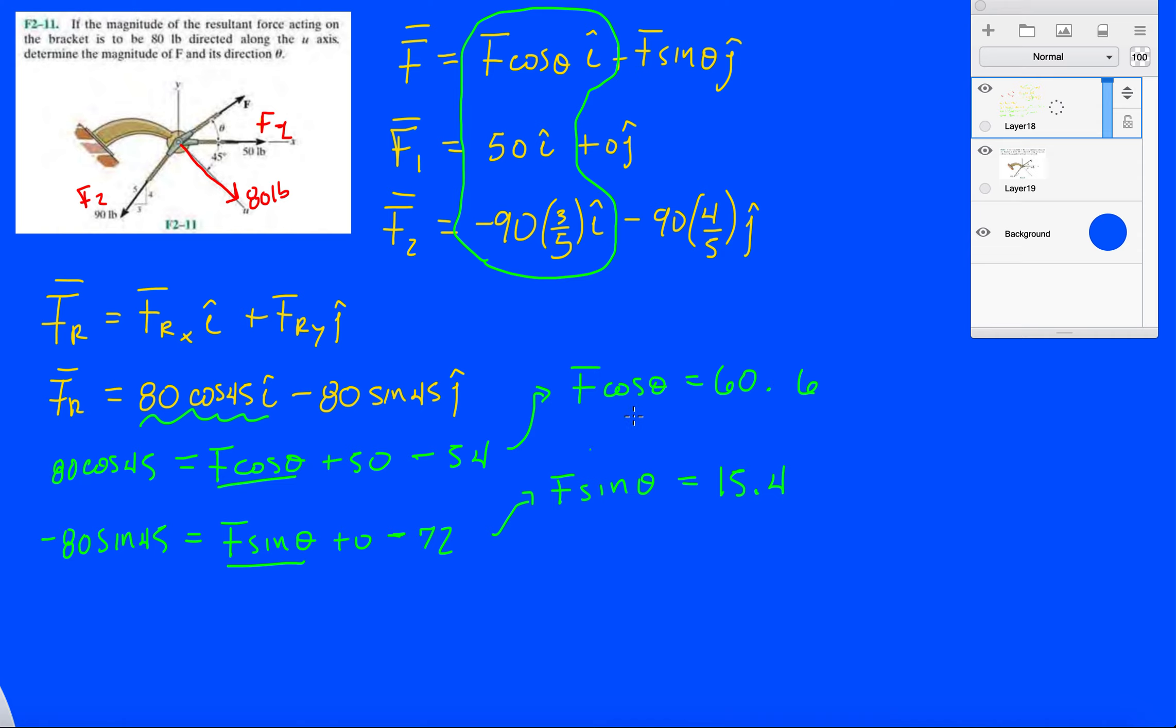And again, do the same as we did last time. We isolated, we made a substitution with F. So we said F equals 60.6 divided by cos theta. And then we substituted this F with 60.6 divided by cos theta down here in the other equation.